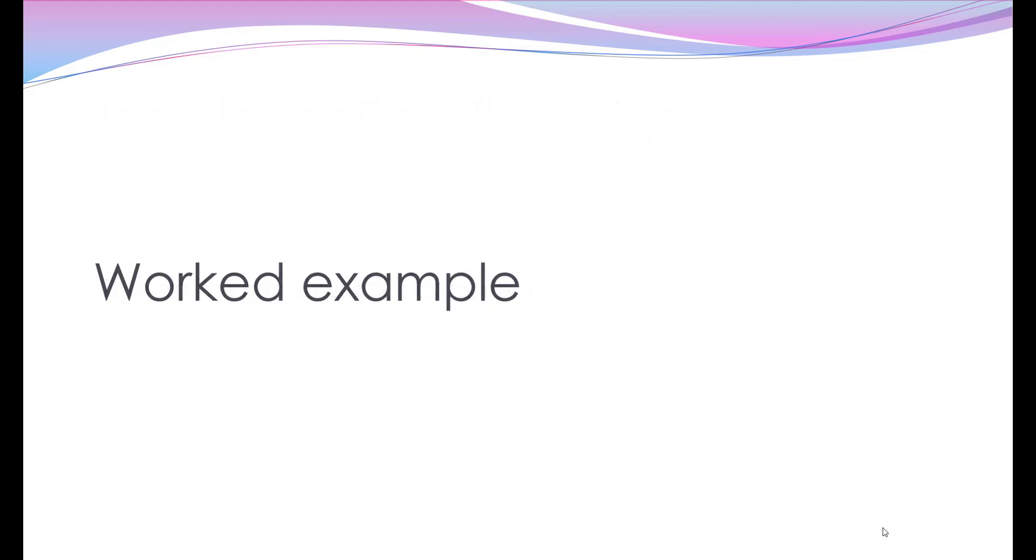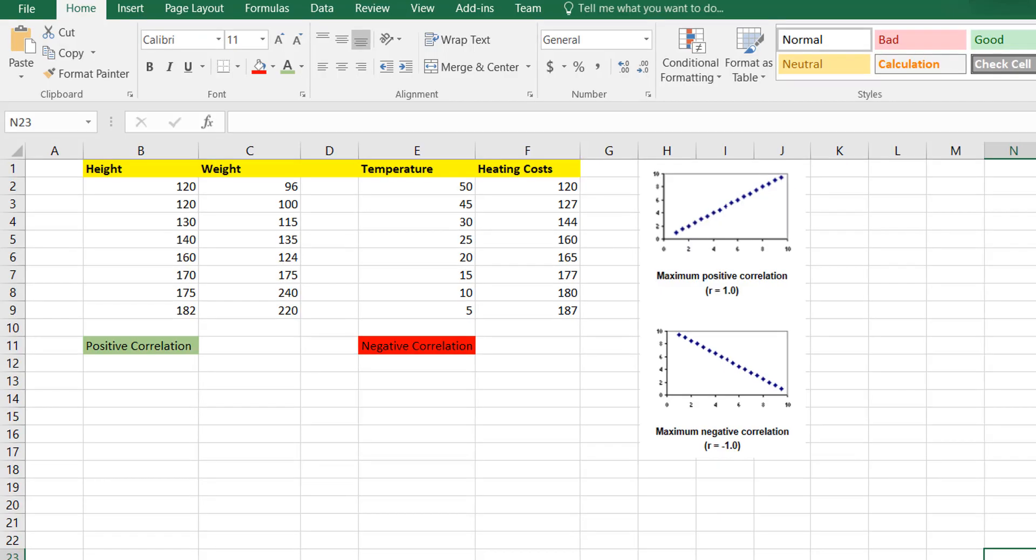So now let's do a quick worked example of how to actually see a correlation, and I'll do this using Microsoft Excel. Okay, so on the left hand side of the screen here we can see we've got height and weight for individuals, and what we want to see if there's a correlation between those two.